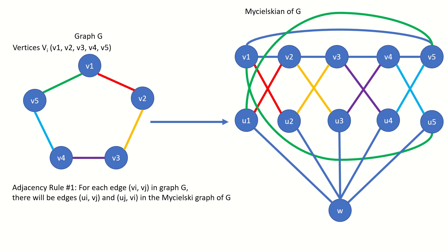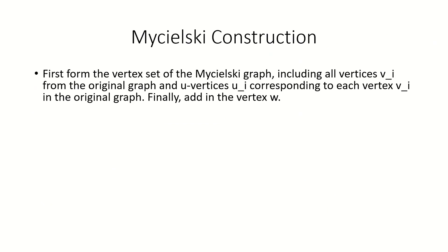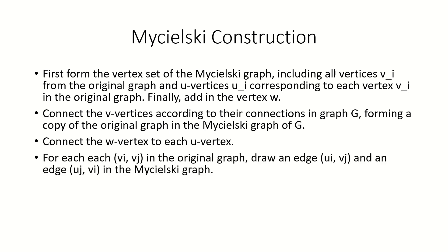To summarize, here are the rules for finding the Mycielskian of a graph. First, list out the vertices of your original graph G, labeling them v1, v2, v3, and so on, and include these vertices in your Mycielsky graph. Then for each v vertex, include a u vertex, and finally add the w vertex. Then connect the v vertices according to their connections in graph G, forming a copy of G among the v vertices. Next, connect the w vertex to each u vertex. And finally, for each edge vi vj in graph G, draw an edge ui vj and an edge uj vi in the Mycielsky graph of G.